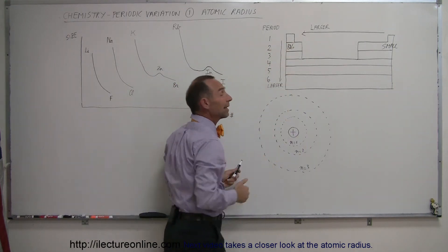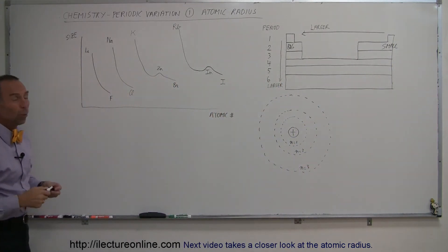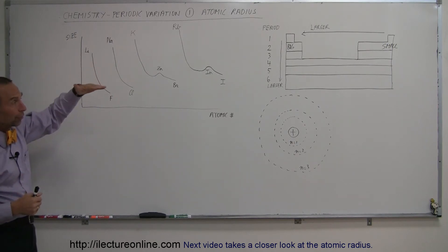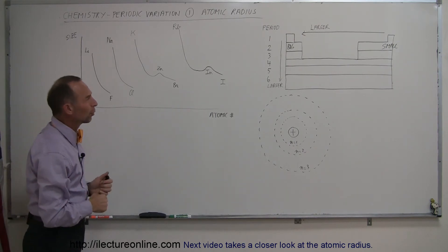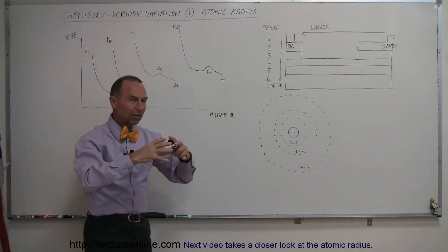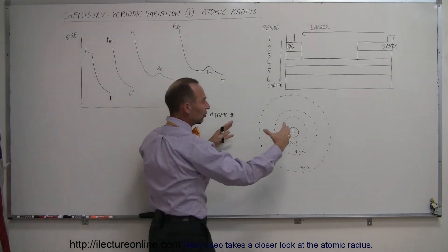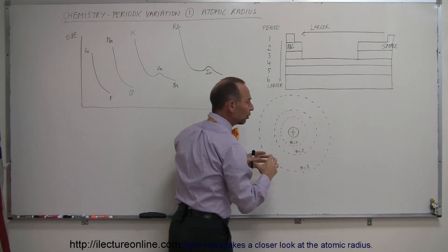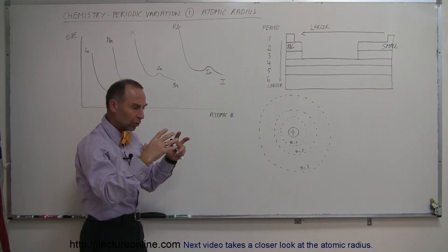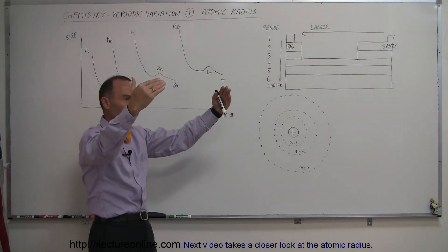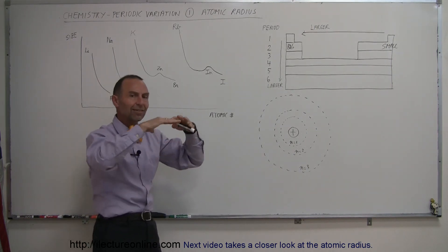By going down the periodic table we find that atoms are bigger, and going from left to right we generally find that atoms become smaller. Why is that? As you go further and further down, you're going to have more and more electrons in orbitals around the nucleus. The electrons repel each other, so they need to take up more space. There is a counterbalance between the forces of the negative electrons and the positive nucleus — the nucleus tries to draw the electrons in closer, but as electrons get closer together they repel each other. Wherever that balance is, that's typically the size of the atom.